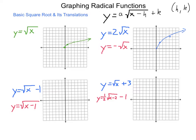For y equals the opposite of the square root of x, we're again starting at the origin. We take the parent graph y equals square root of x and reflect it across the x-axis. We end up with the same graph, just moving downward.